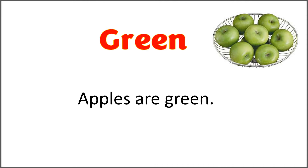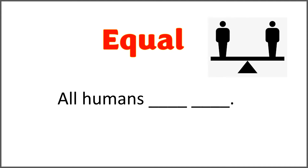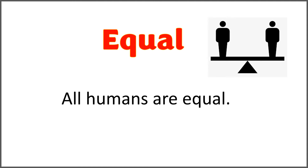Apples are green. The given word is 'equal.' All humans blank blank. Use 'are' with 'equal' to complete the sentence. All humans are equal.